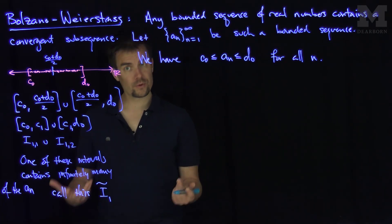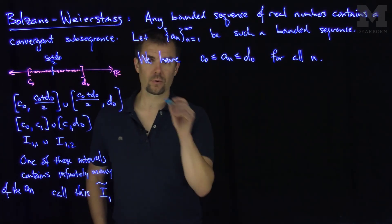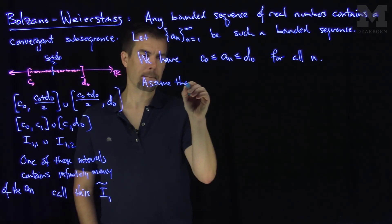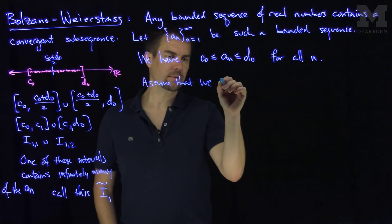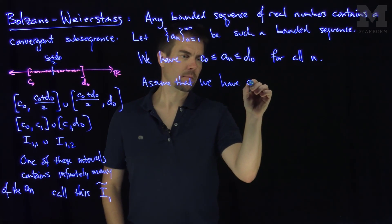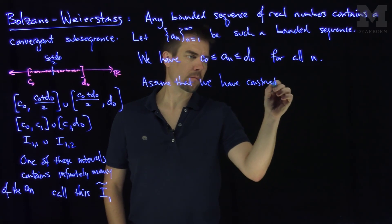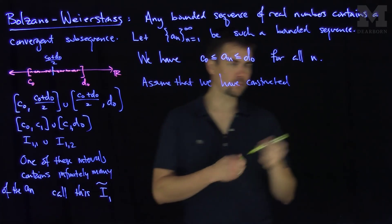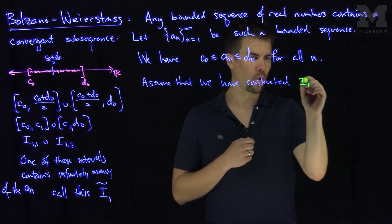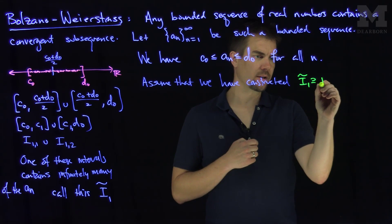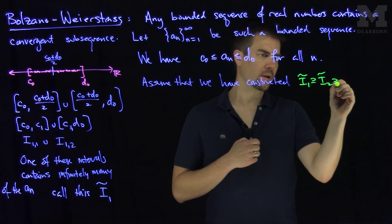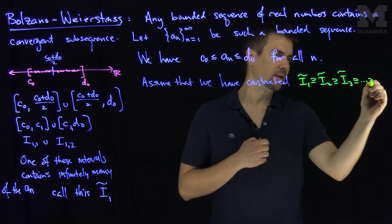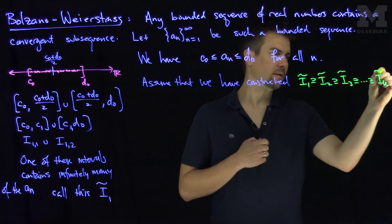Now we can assume, so there's at least one step in the induction. So now assume that we constructed this nested collection: i1 tilde contained in i2 tilde contained in i3 tilde contained in ik tilde.